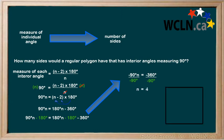So a regular polygon with interior angles measuring 90 degrees has 4 sides.